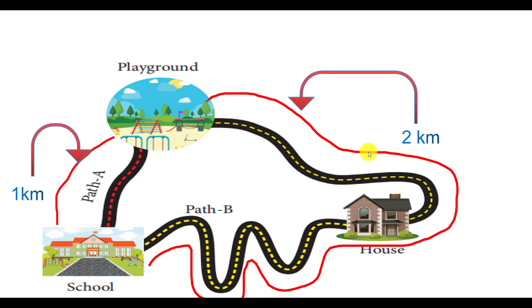Which is the longest distance? Yes, of course, path B is the longest distance, and path A is the shortest distance. Now I think it is very clear which one is the shortest distance between the two points.